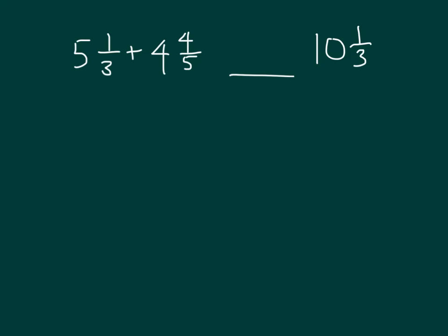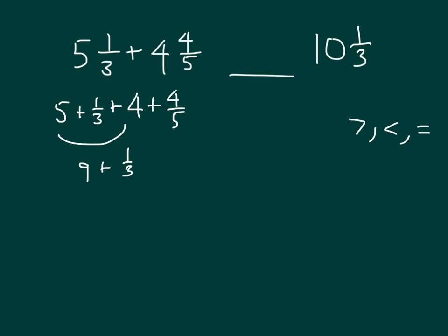Here's another type of problem where you are asked to compare two values with a greater than, less than, or equal sign. We will have to get a common denominator. We have an expression on one side and a mixed number on the other. Let's reorder the expression: five plus one-third plus four plus four-fifths. Five and four is nine, plus one-third plus four-fifths. We know four-fifths isn't quite one, so if we had one and nine-and-a-third, it would equal ten-and-a-third. But we're one-fifth lower than that, so this will be less than for sure.